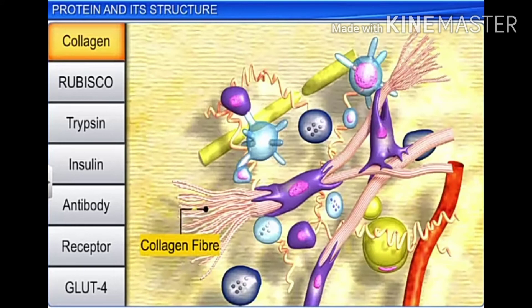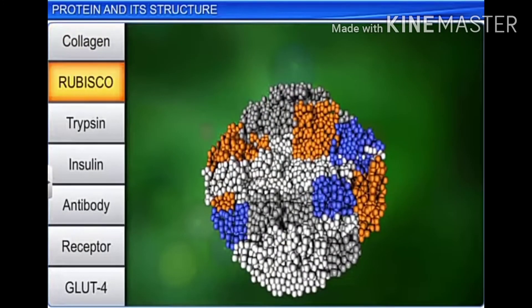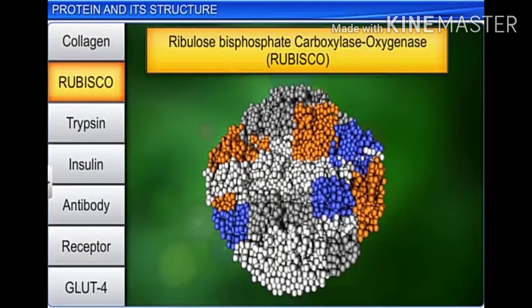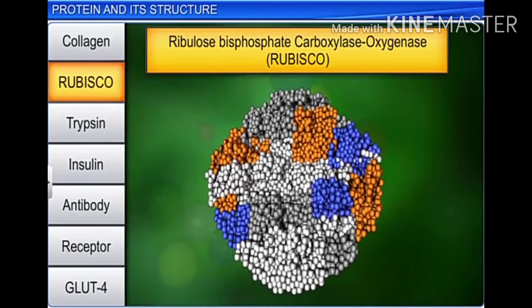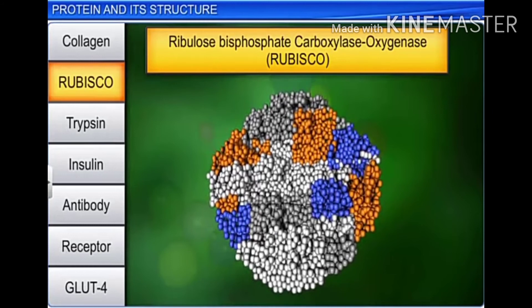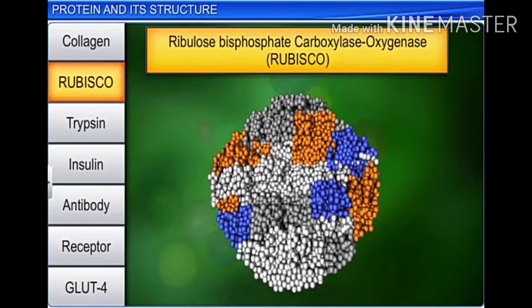On the other hand, ribulose bisphosphate carboxylase oxygenase, or RUBISCO, is the most abundant protein in the whole of the biosphere. It acts as a catalyst during the process of carbon fixation.